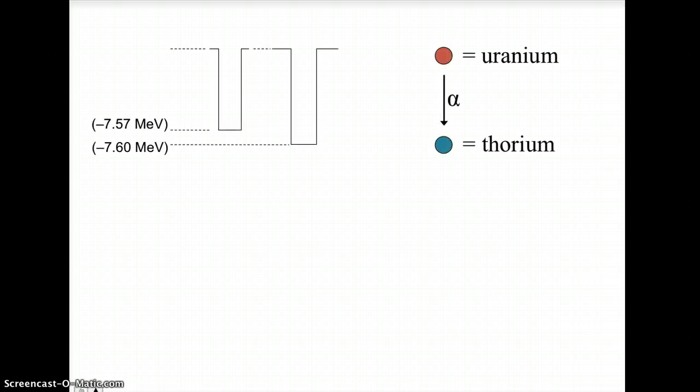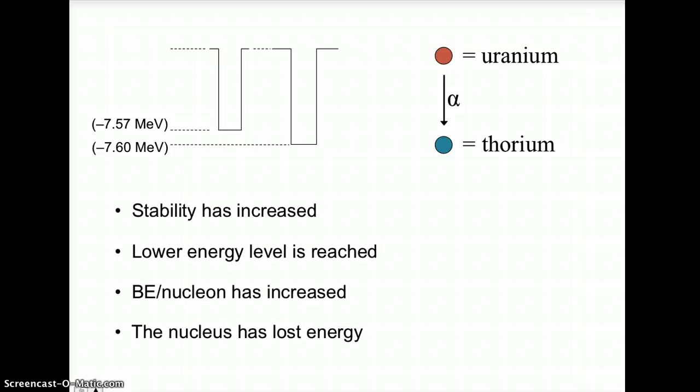The final thing we've looked at so far relates to stability. When these decays occur, they are natural. They happen without any human intervention out in nature. And when these natural transmutations occur, there's a whole host of things that we could say about stability and energy. The well gets deeper for each nucleon, energy is being lost, the binding energy per nucleon increases, and a lower, more stable energy level is reached.